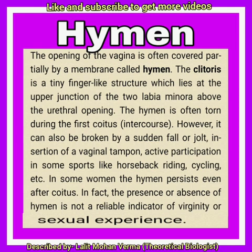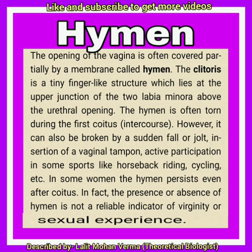Labia minora are paired folds of skin under the labia majora, containing sebaceous glands. The clitoris is a tiny finger-like structure lying at the upper junction of the labia minora. It is an erectile organ homologous to the penis. The opening of the vagina is often partially covered by a membrane called the hymen, which is not an indicator of sexual experience.